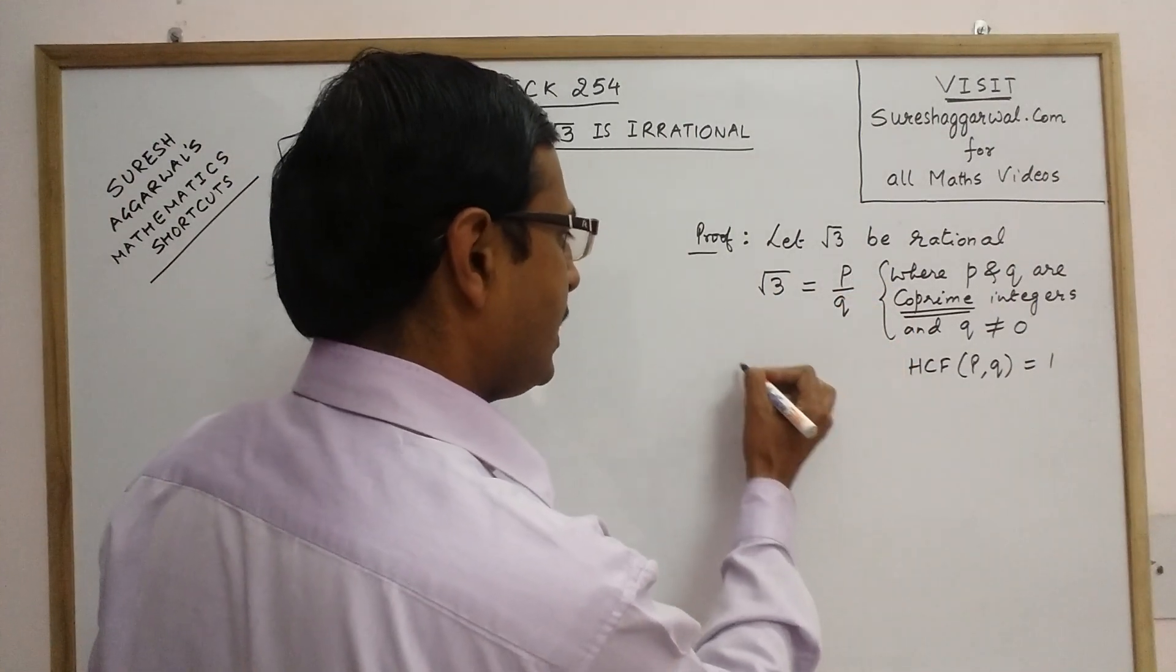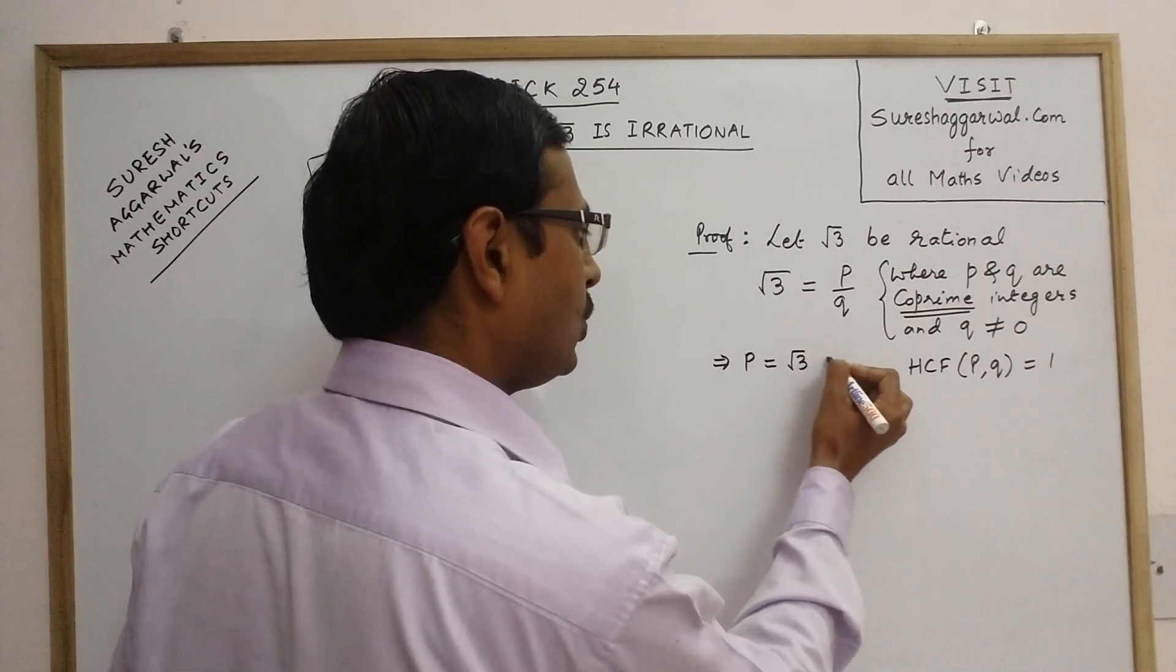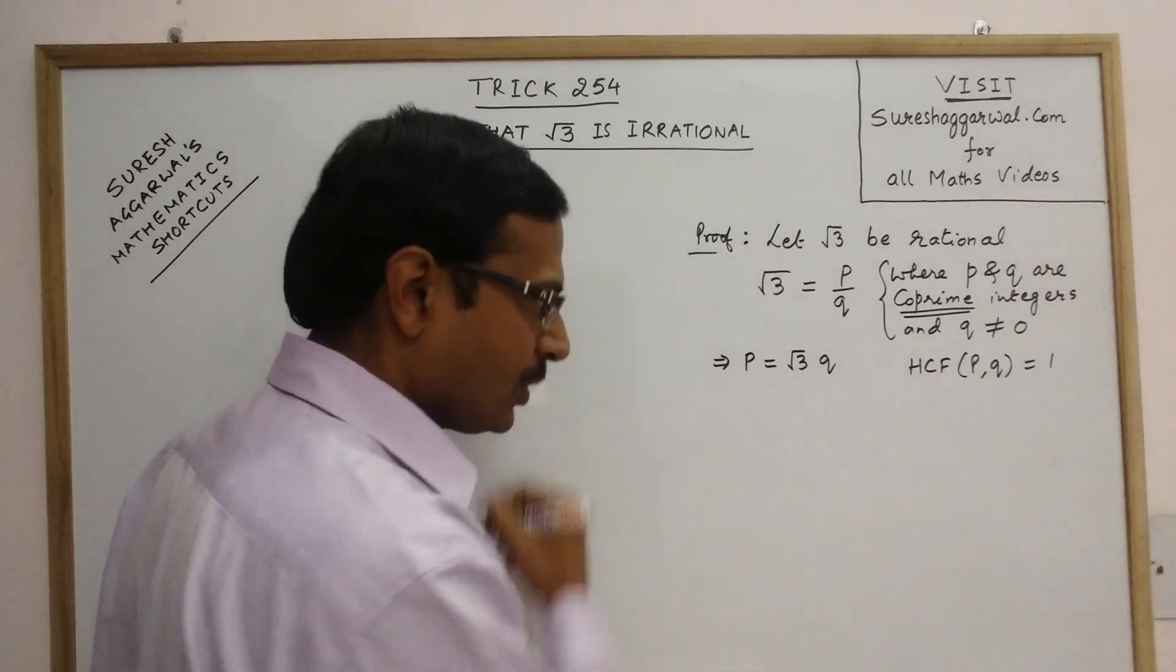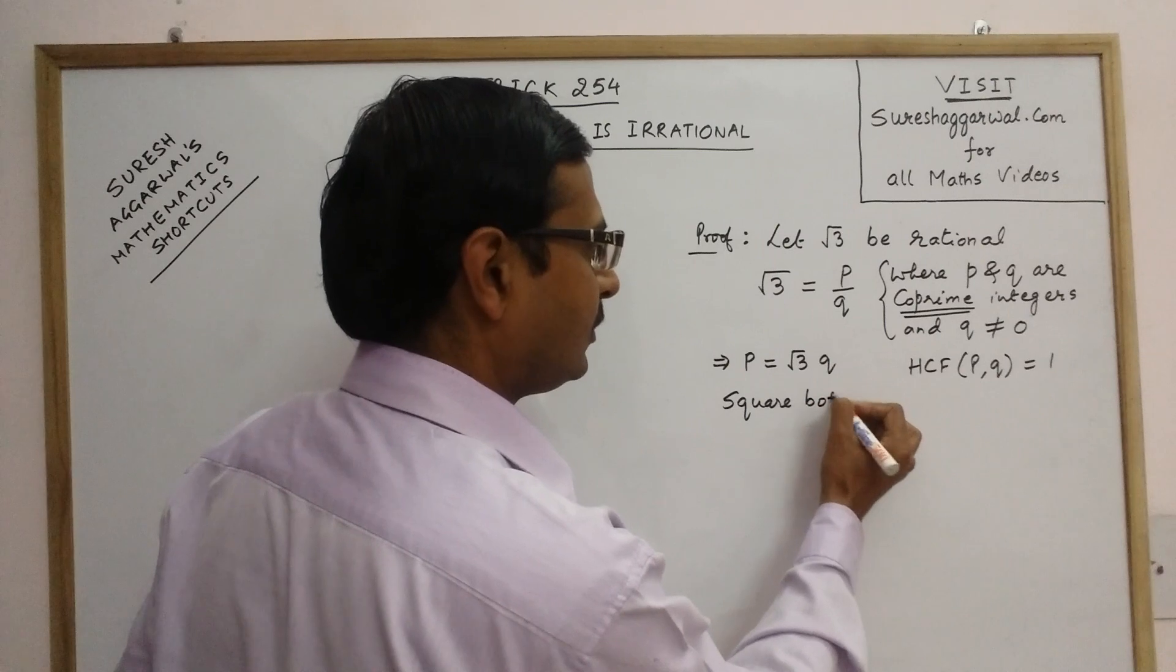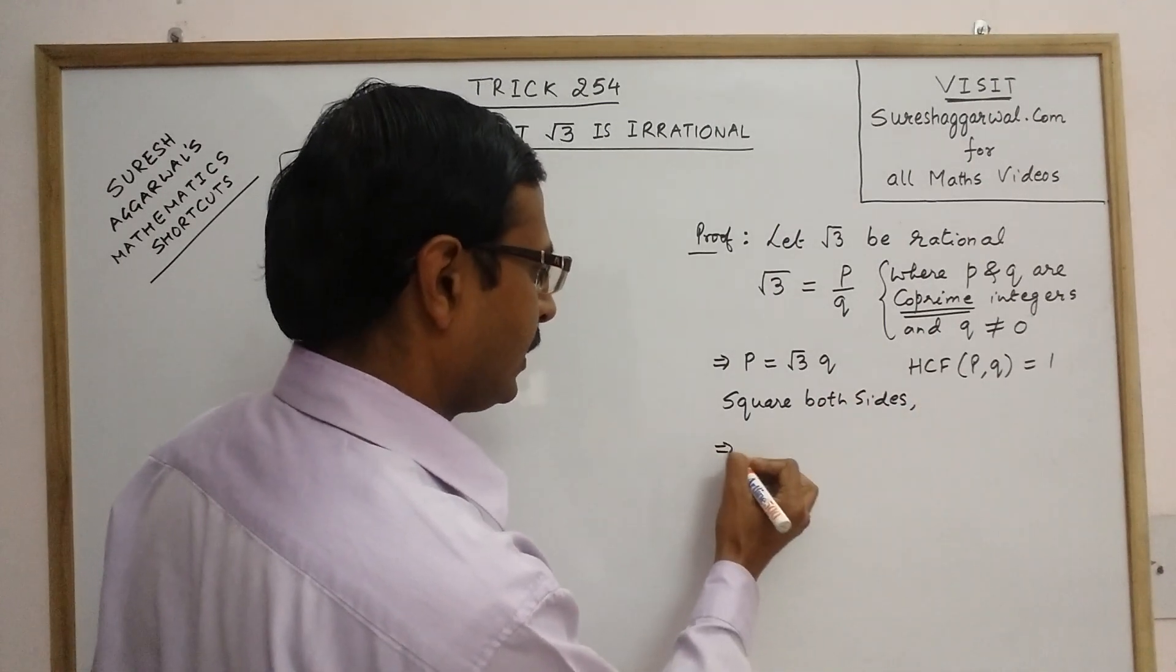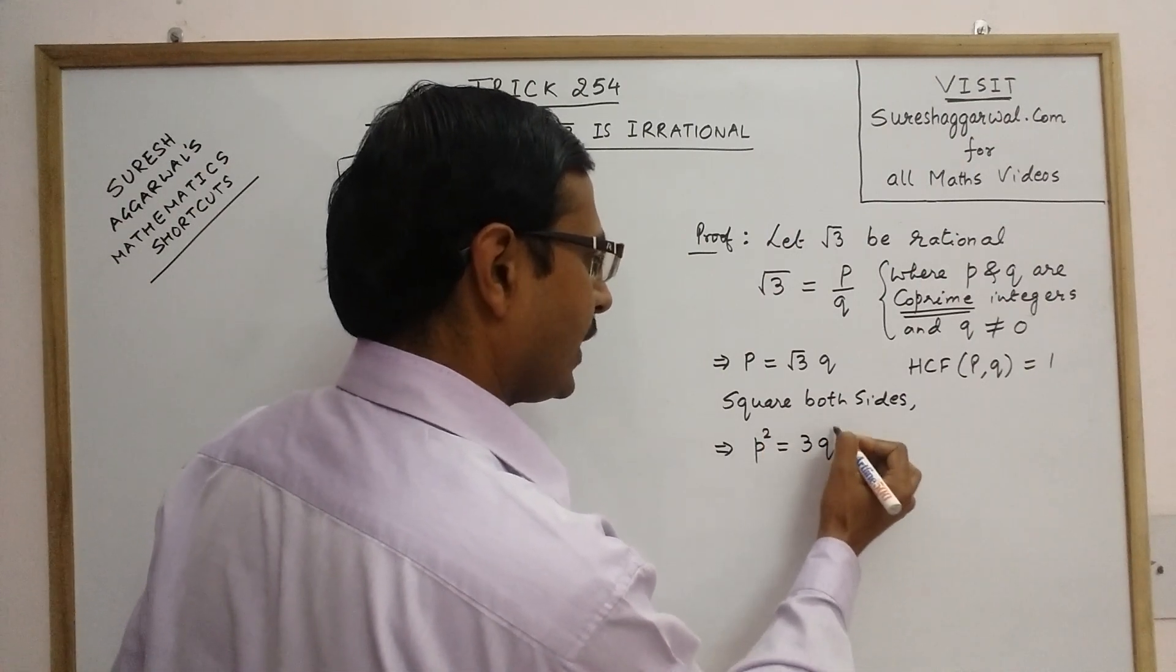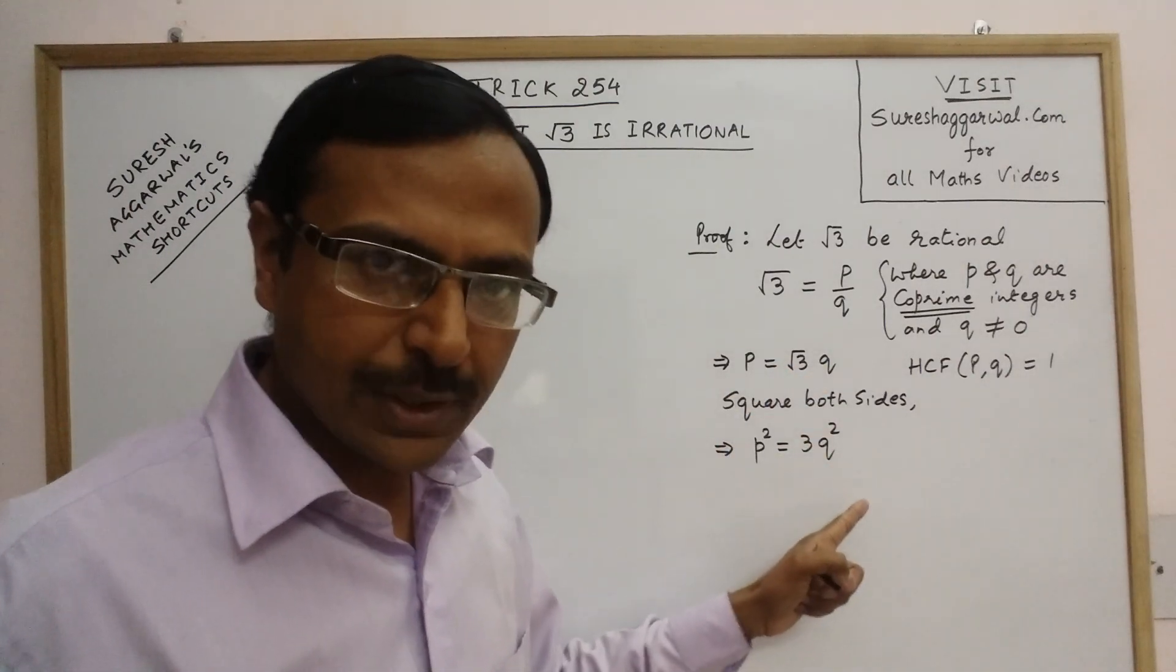See we have p equal to root 3 into q and if I want to remove this root 3 from here, I just square both sides and on squaring I get p square equal to 3q square. So p becomes p square, root 3 becomes 3, and q becomes q square.